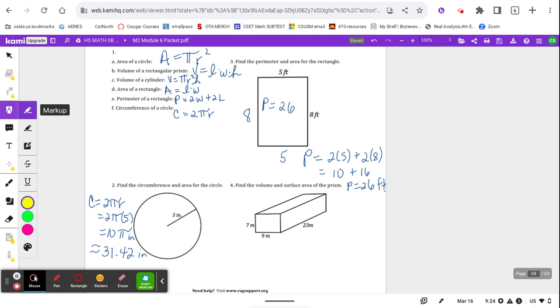Because we're rounding, we're going to use the approximation symbol. And then don't forget those units. So again, why are we doing two answers for this one? The circumference in terms of pi is just 10 pi. That's the exact answer. And then as a decimal, my approximate answer is approximately 31.42 inches.